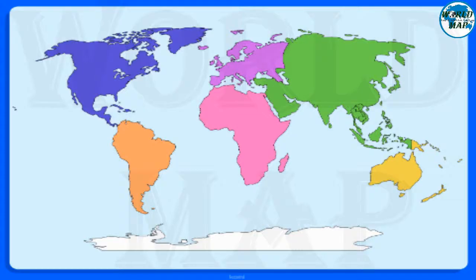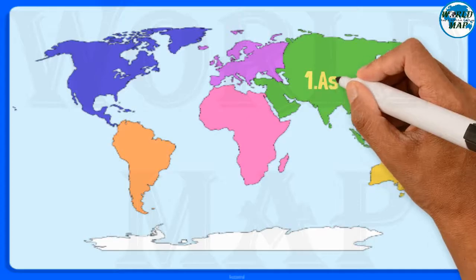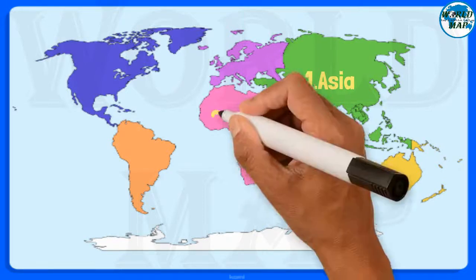Number 1: Asia. It is the largest continent in the world both in terms of area and population. It comprises 48 nations and 60% of the world's population.